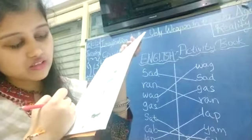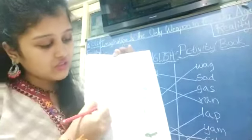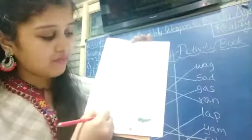Now wax. W-A-X wax. Where is wax given over here? Here — so here is wax. C-A-B cab. So cab is last. C-A-B cab. Now tap. T-A-P tap. D-A-M dam. So dam is given here. So you have to match these words with their particular picture.